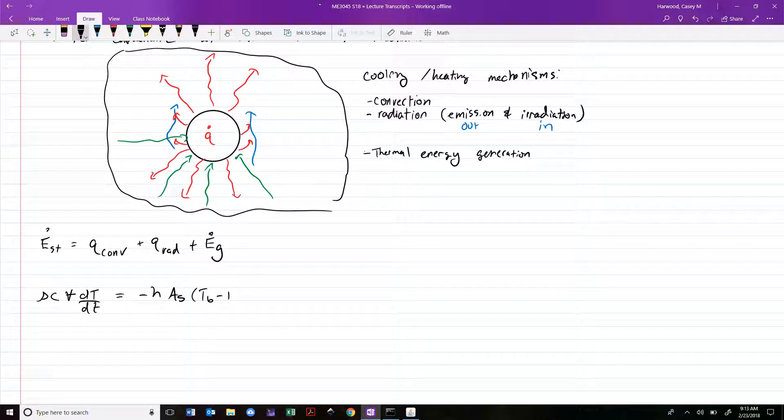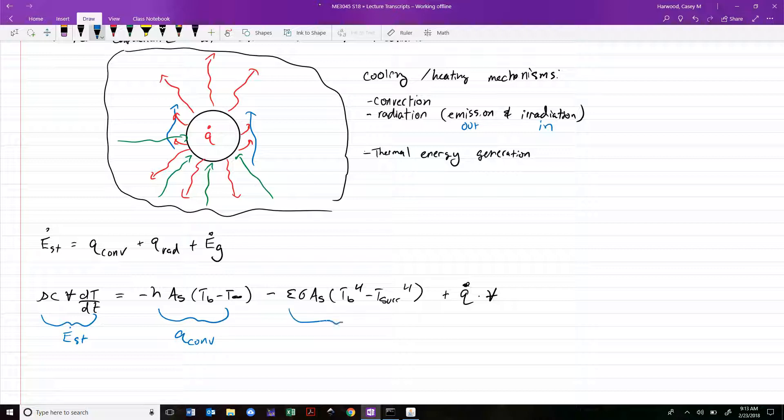This represents the rate of change of stored energy in our object. This represents Q due to convection. Minus - here's the Stefan Boltzmann law - epsilon sigma As T B to the fourth minus T surroundings to the fourth power, plus Q dot times volume. We have now here's our rate of change of stored energy, here's our Q due to convection, here's Q due to radiation, and here is E dot G. This is all stuff we did in chapter one. We are just now actually getting around to trying to solve for T as a function of time.